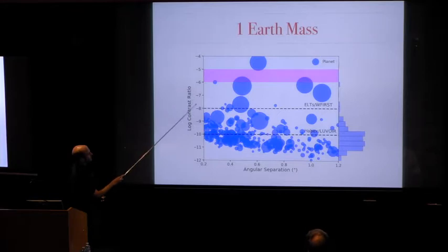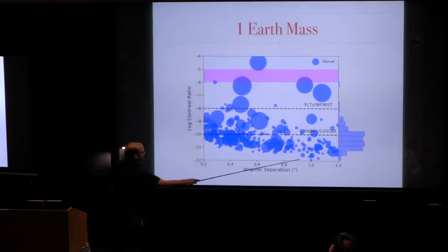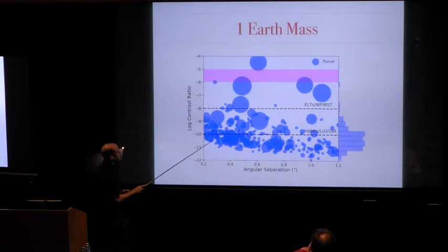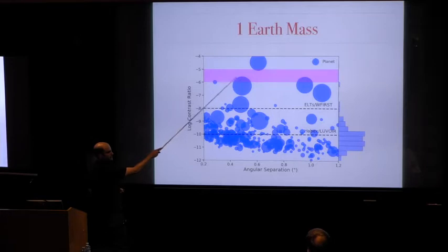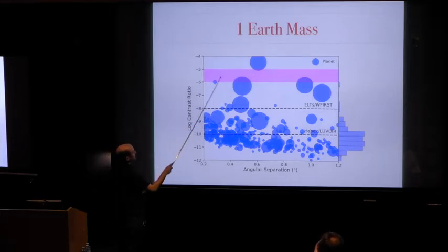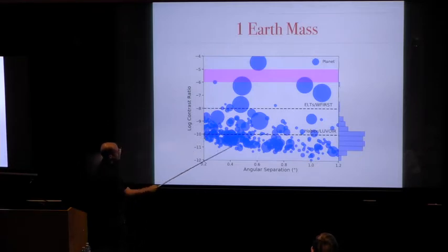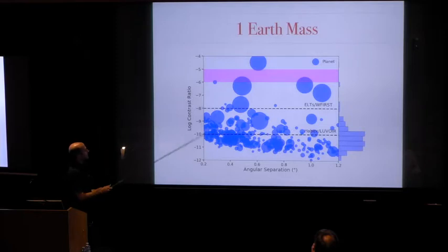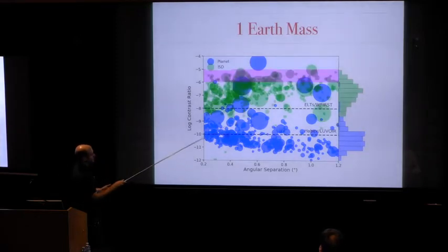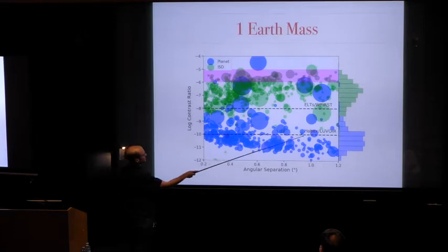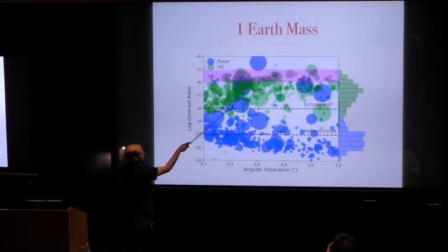First here is the contrast ratios for just the planet itself. Here's a contrast ratio for Habex and LUVOIR, ELTs and W first, and here's GPI and Sphere. So GPI and Sphere are detecting the monsters in thermal emission, but most of them are down here at sort of 10 to the minus 10. At this mass scale in irregular satellites, these things are extremely bright. Every one of these planets has a corresponding irregular satellite disk, and it can boost it by several orders of magnitude.